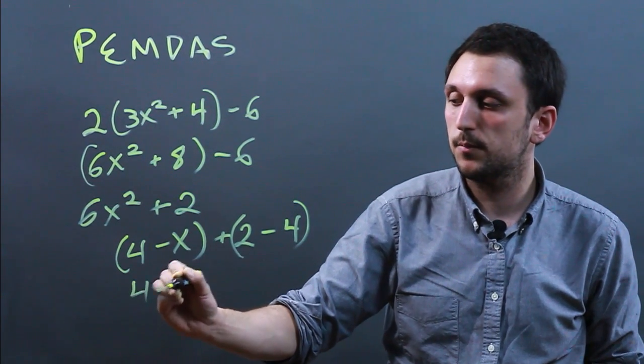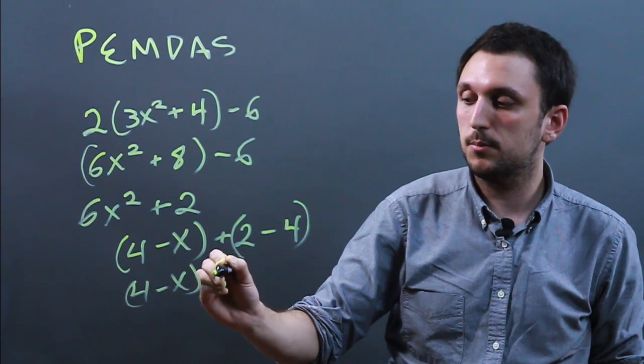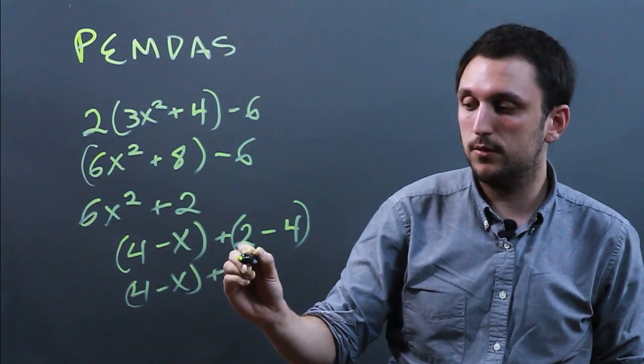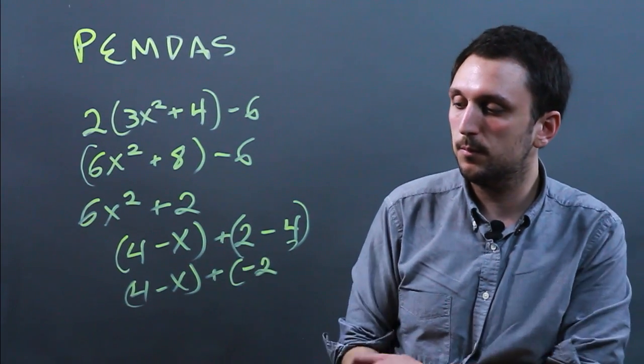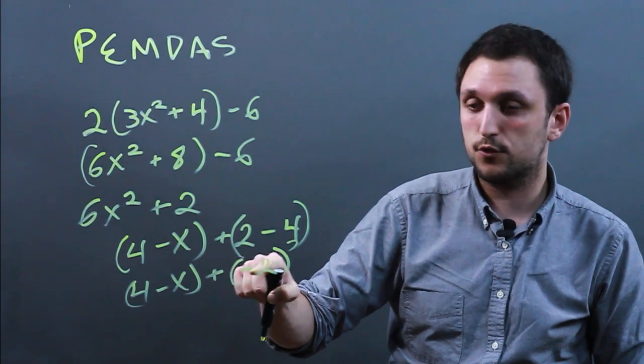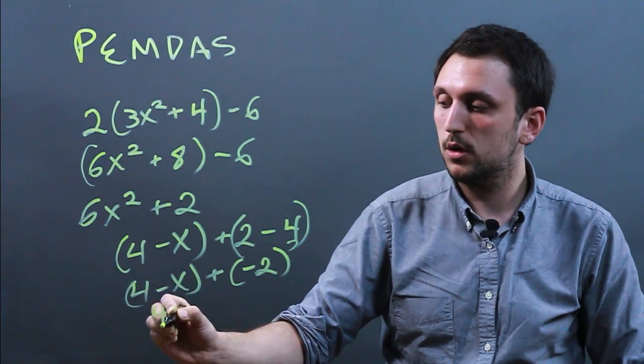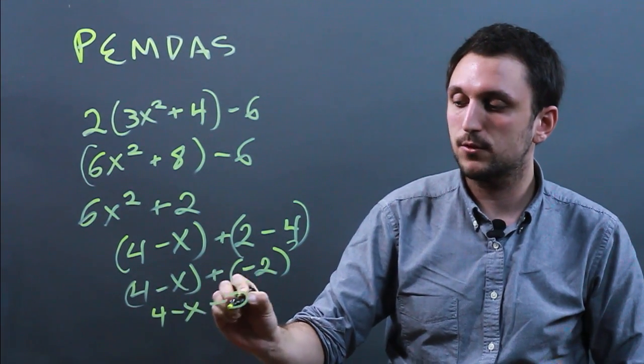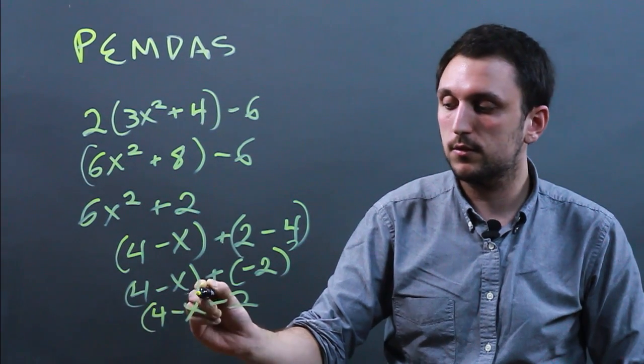And the plus negative 2 would distribute and become 4 - x - 2, and because this is still in parentheses we have to do this first and we have not much to do with it, so we're going to say...